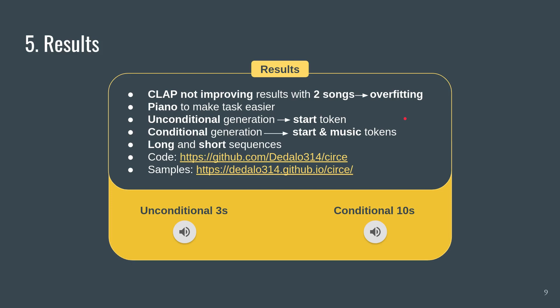The generation can be done unconditionally or conditionally. Unconditional generation is done by providing just a start token, and the model starts generating piano tokens by itself. Conditional generation involves providing a start token plus some previous music tokens that we want the model to continue. The model has been trained with sequences of three seconds, but it can generate longer sequences by generating new music based on the last three seconds of the previous generation. The code is available on GitHub together with some samples. Here's an example of unconditional three-second generation — we feed the model the start token and it generates whatever piano it wants.